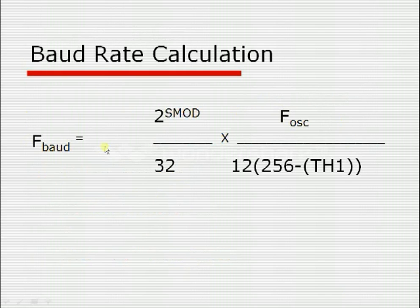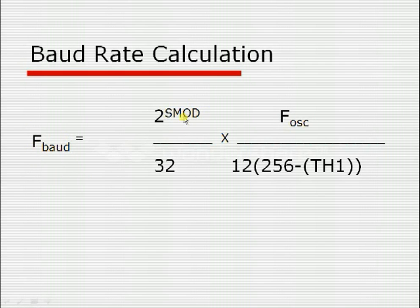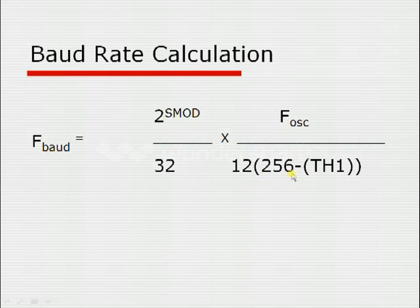The baud rate formula is: F_baud = (2^SMOD / 32) × (F_oscillator / 12) × (1 / (256 - TH1)). The oscillator frequency is 11.0592 MHz. SMOD is for doubling the baud rate, 32 is a constant from the internal divide-by-32 circuit in UART, and 256 - TH1 relates to Timer 1 in Mode 2 (auto-reload mode). Timer 1 must be used in auto-reload mode for generating the baud rate because 256 is the maximum value only in that mode.